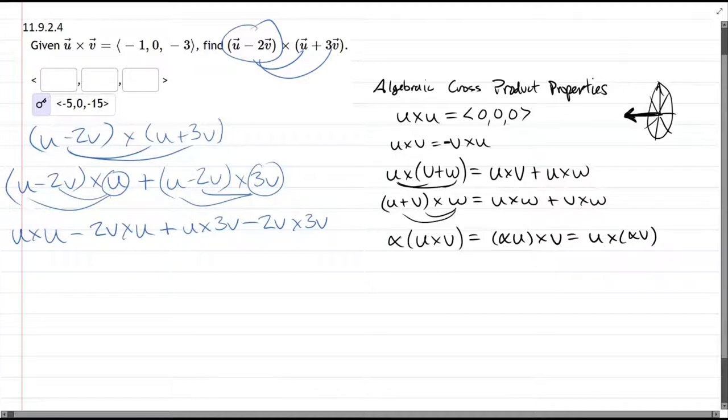The last property we have is you can take your scalar and you can attach it to the first vector or the second vector, but you can't move it to both. So what we can do is we can take this scalar and we can move it out front. So 2 times 3 is 6, v cross v. Move this scalar to the front, 3u cross v.